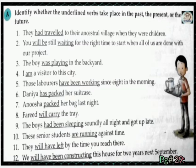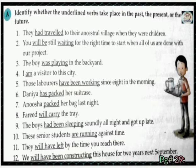اب ہم اسی method کو مدنظر رکھتے ہوئے Exercise A solve کریں گے۔ Open your book, page number 29, Exercise A۔ Exercise A کی statement میں یہ بولا گیا ہے کہ sentence پہلے سے دیا گیا ہے، اب آپ نے underlined verb کا tense بتانا ہے — past tense ہے، present tense ہے، یا future tense ہے۔ مثال: 'They had traveled to their ancestral village when they were children۔' یہاں 'had traveled' verb سے پتہ چل رہا ہے کہ یہ past perfect tense ہے۔ ہر sentence کے سامنے tense کا نام لکھیں۔